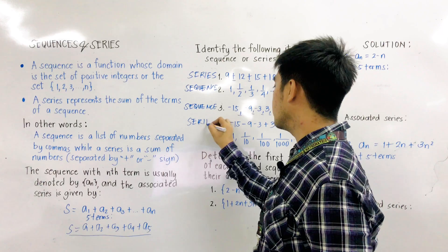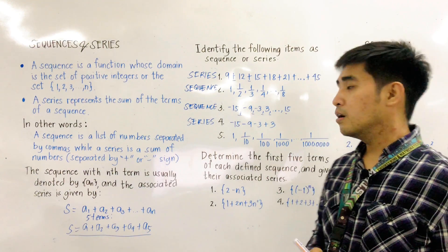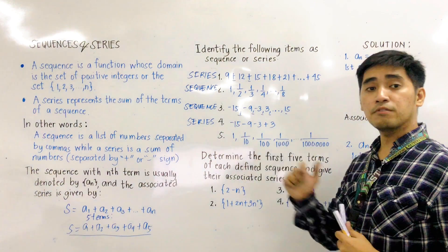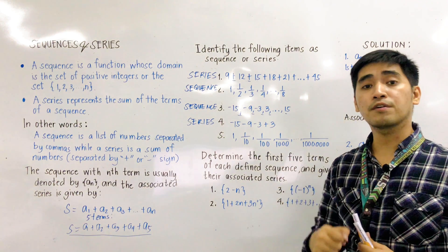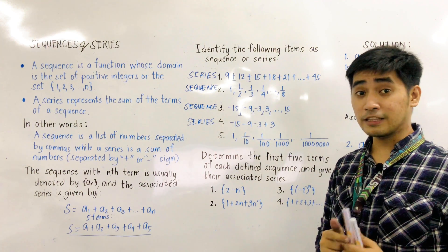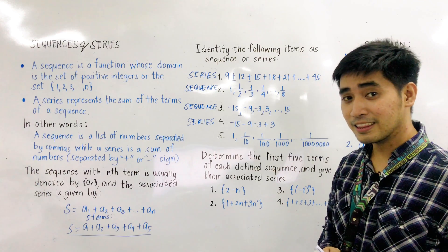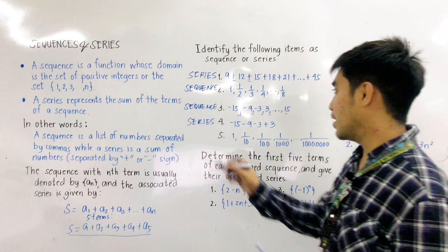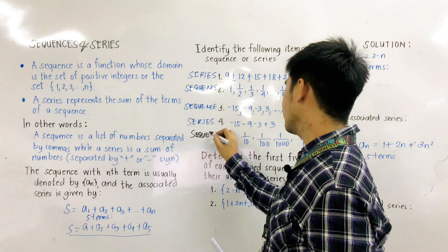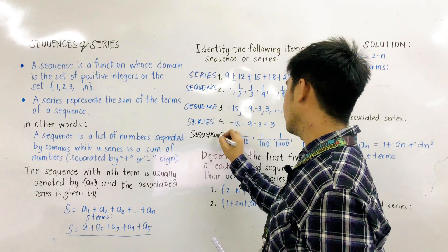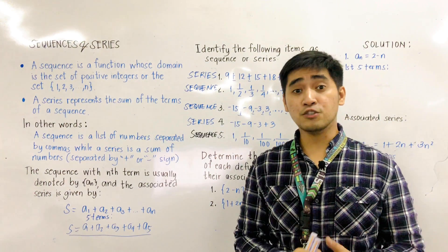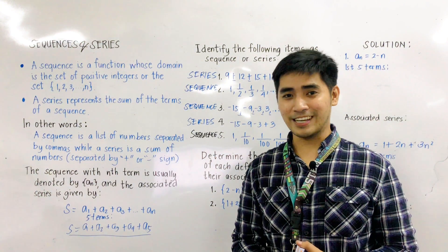For the last one, we have: 1, 1/10, 1/100, 1/1000, up to 1/10,000,000. Separated by commas, we call that a sequence. So we are now done differentiating series and sequences.